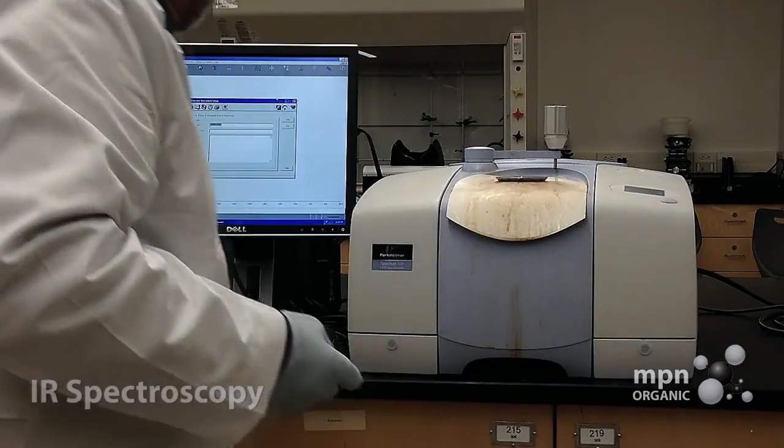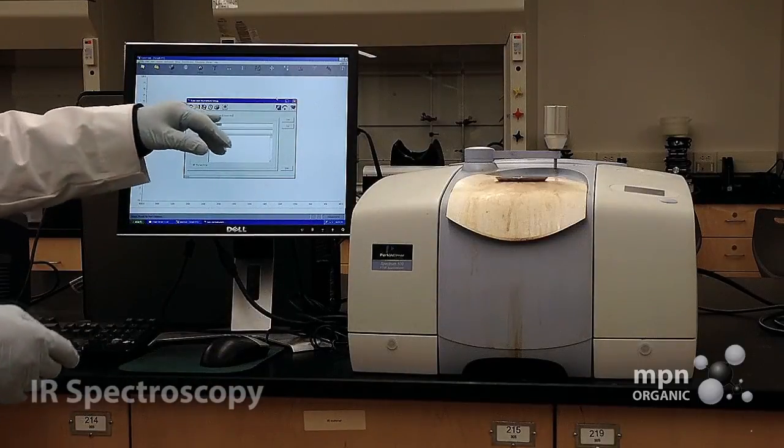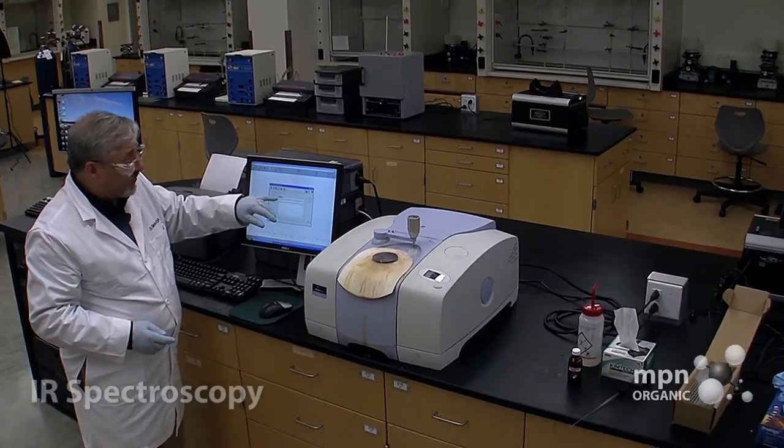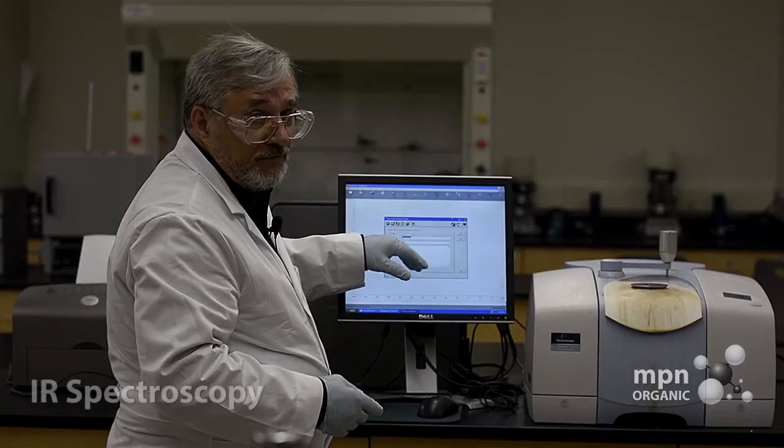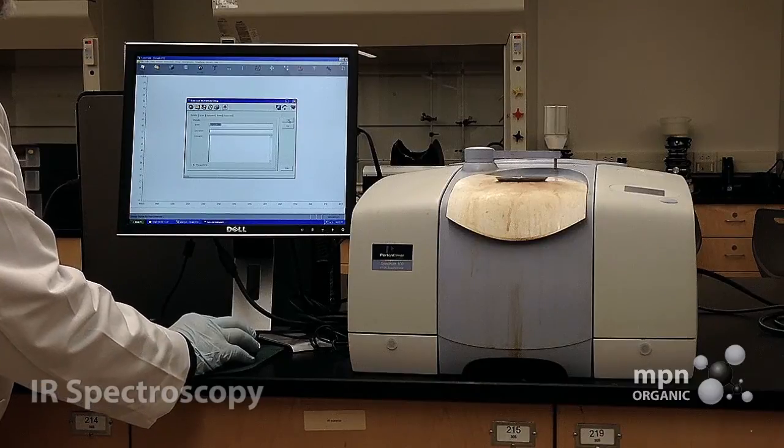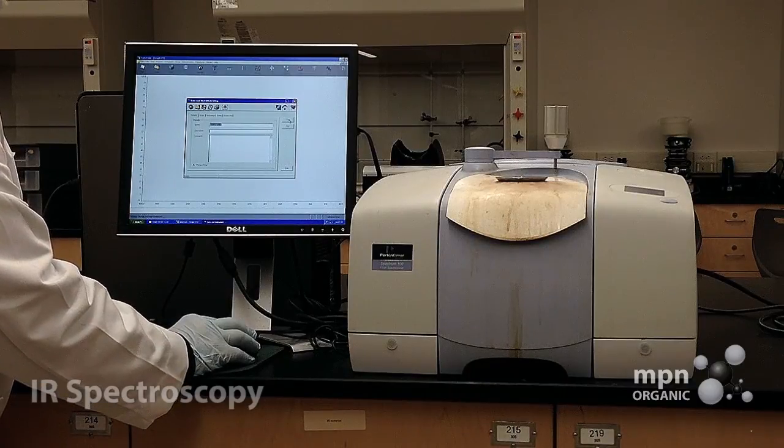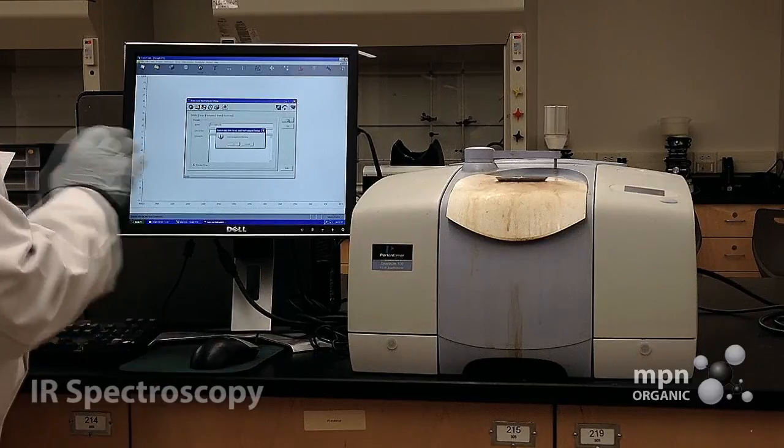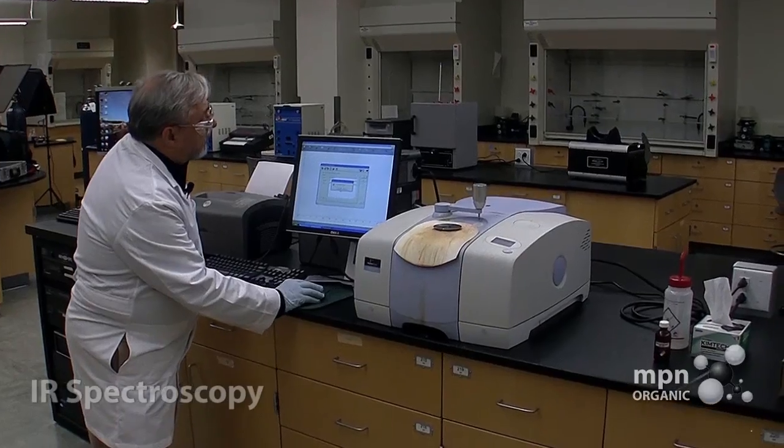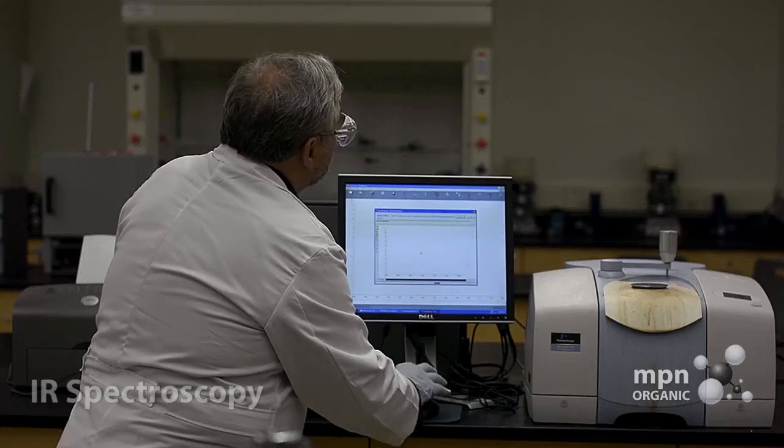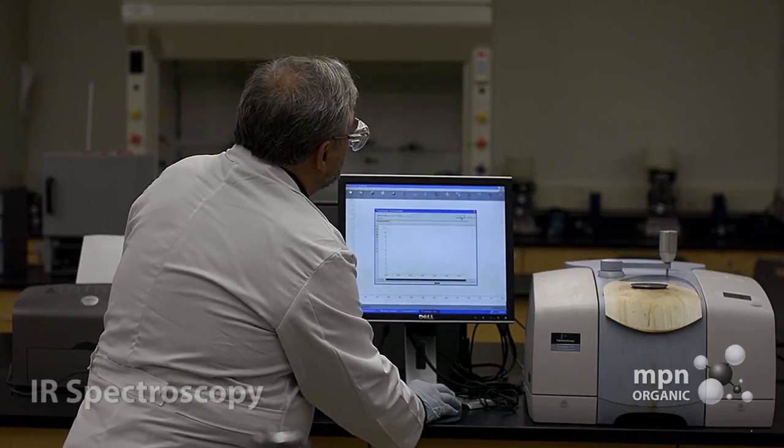So now we have the background. And I've typed in here already benzaldehyde, and that's going to identify the infrared spectrum that we get from this when we print it out. So once again, we're going to pulse this. But now, instead of taking background, we're going to do start. It says warning, duplicate file name. Yes, that's fine with me, and then scan.